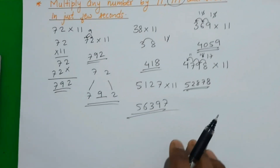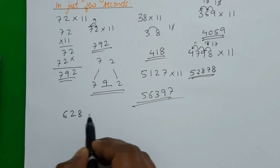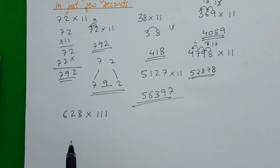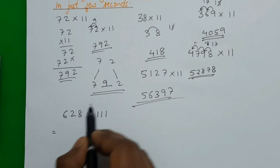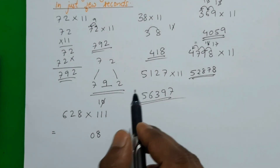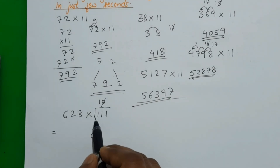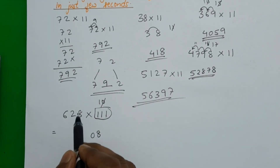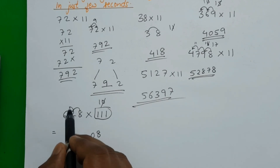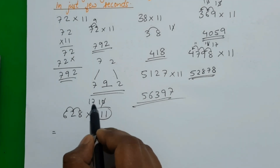Now let's try multiplication by 111. Take any three-digit number — suppose 628 × 111. We write 8 first. Then 8 plus 2 is 10 — write 0, carry 1. When multiplying by 111, the middle steps require adding three digits: 8 plus 2 plus 6 is 16, plus the carried 1 is 17. Write 7, carry 1.